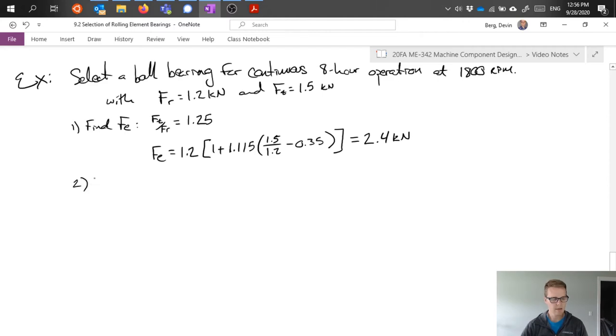Next, we can choose an application factor. And we can pull this from table 14.3 in the book. We said that we would assume light impact. So we're looking at that table, we have light impact, we're doing a ball bearing, gives a range.